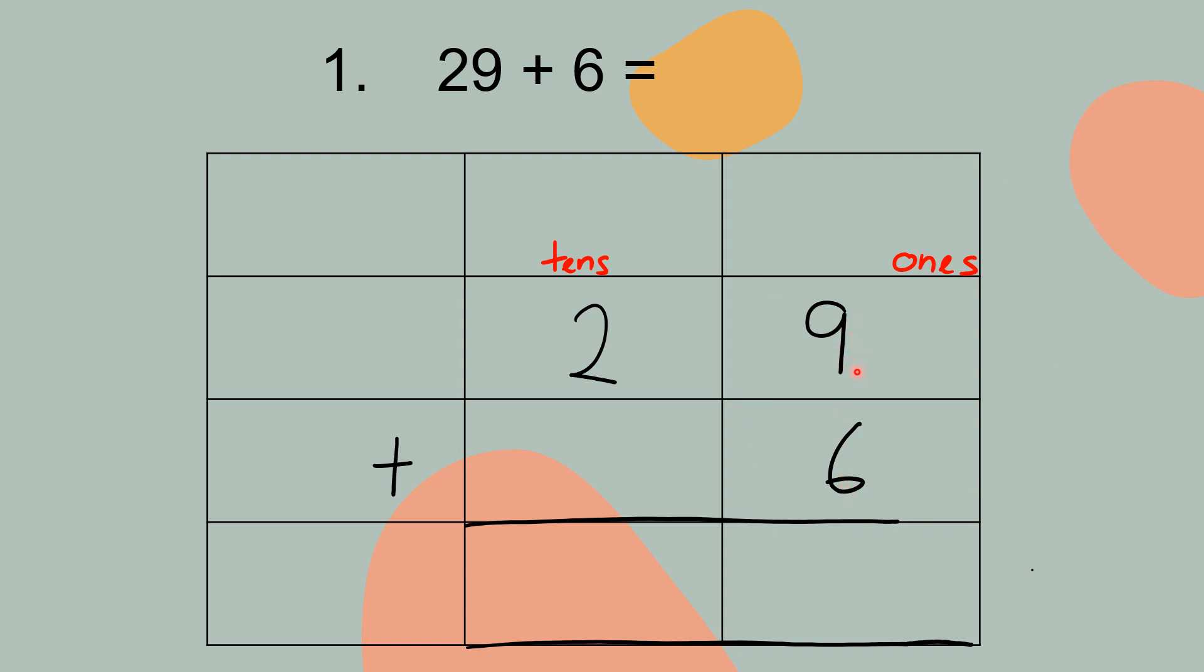9 plus 6 equal to how many? So now you count. 9, 1, 2, 3, 4, 5, 6, 7, 8, 9. And plus 6: 1, 2, 3, 4, 5, 6.